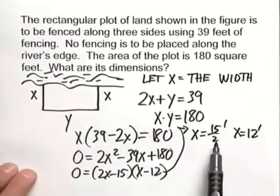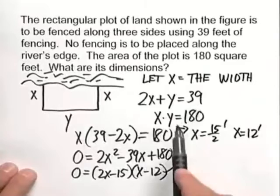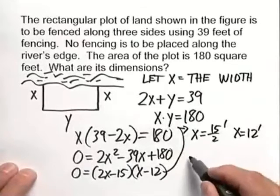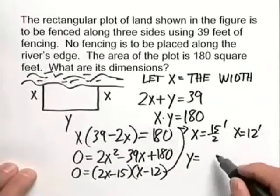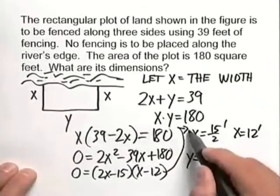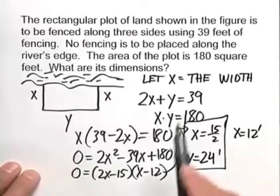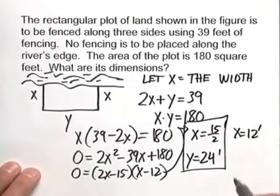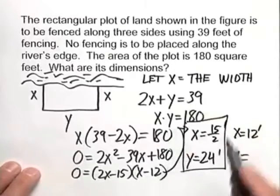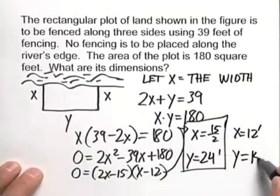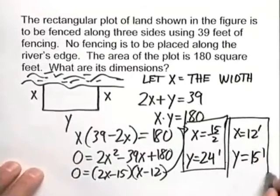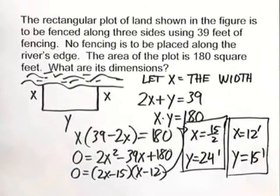Now we need to find the length. Take this x value, plug it back into either one of our original equations and solve. So our length will be 24 feet in one case. So that would be one dimension that satisfies the two requirements. And then plugging 12 into one of our two equations, we'll get 15 feet. And that would be another dimension that gives us 39 feet total around our corral and 180 square feet.